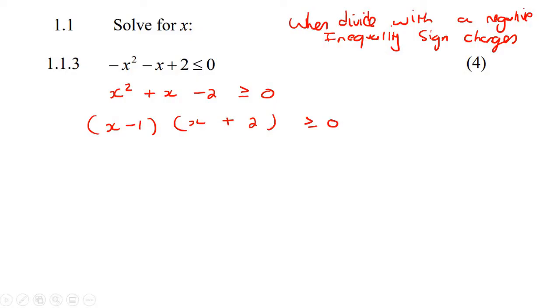Now where a lot of students go wrong is that they try to go to the next step, and then they say x minus 1 is bigger than 0, or x plus 2 is bigger than 0. That is wrong. What you want to do is just quickly write this on the side of your paper. Make it equal to 0, and then just pretend that it was equal to 0 like that. So you'd get x equals to 1, or x equals to negative 2.